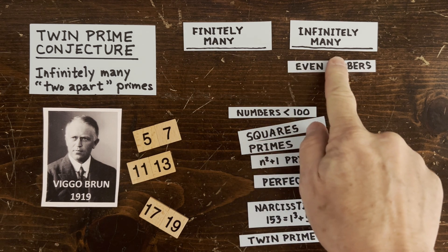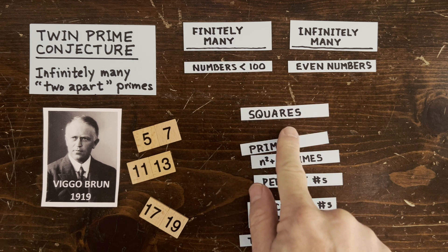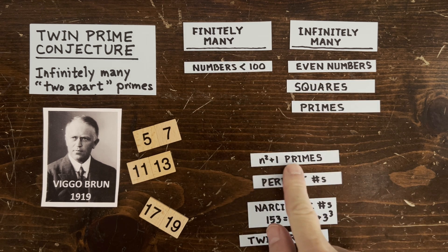How many even numbers are there? Infinite. Numbers less than 100? Finite. Squares? Infinite. Primes? Infinite. Thanks, Euclid.